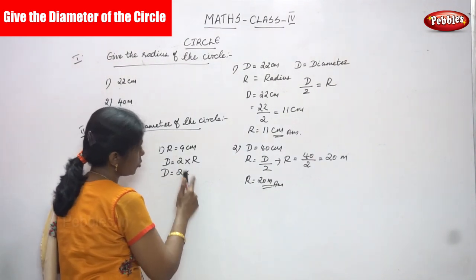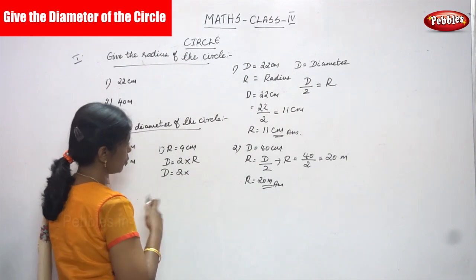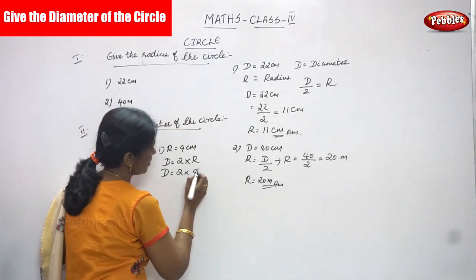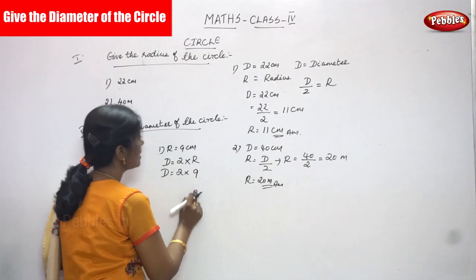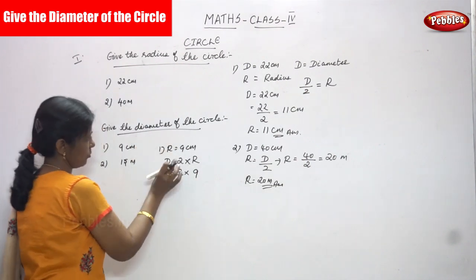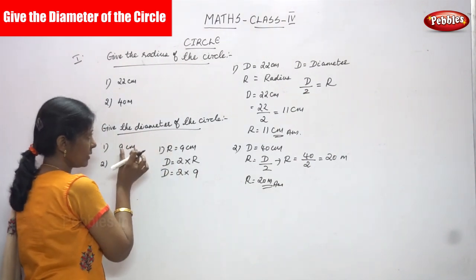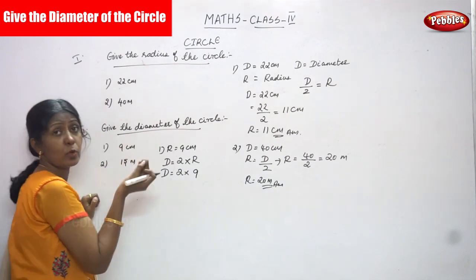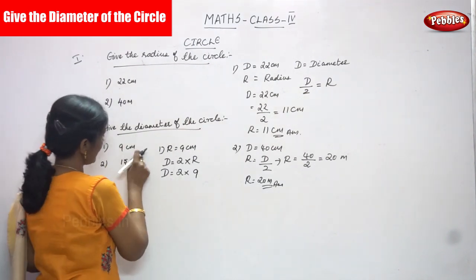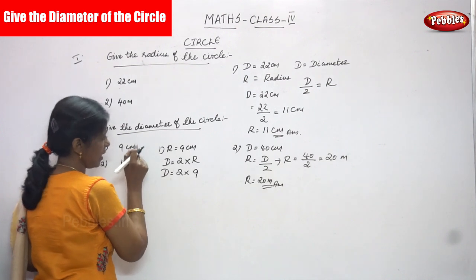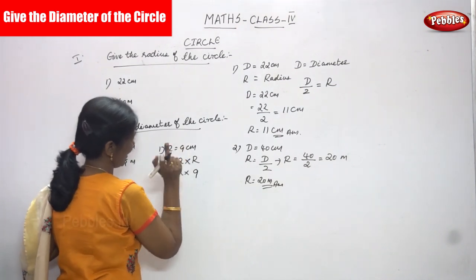d is equal to 2 into r. What is the value of r? You have to write 9. You have to substitute 9 here because this r is a radius. You have to find out diameter of the circle. If you want to find out the diameter of the circle, the radius is given already in the question. So this 9 centimeter is nothing but r. This is called r is equal to 9 centimeter.